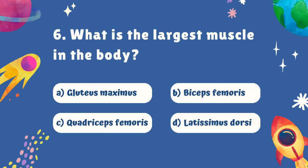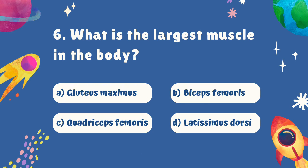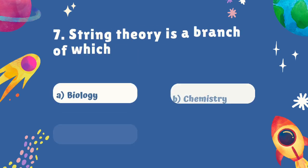Question number six. What is the largest muscle in the body? Is it A. Gluteus maximus, B. Biceps femoris, C. Quadriceps femoris, or D. Latissimus dorsi? The correct answer is A. Gluteus maximus.